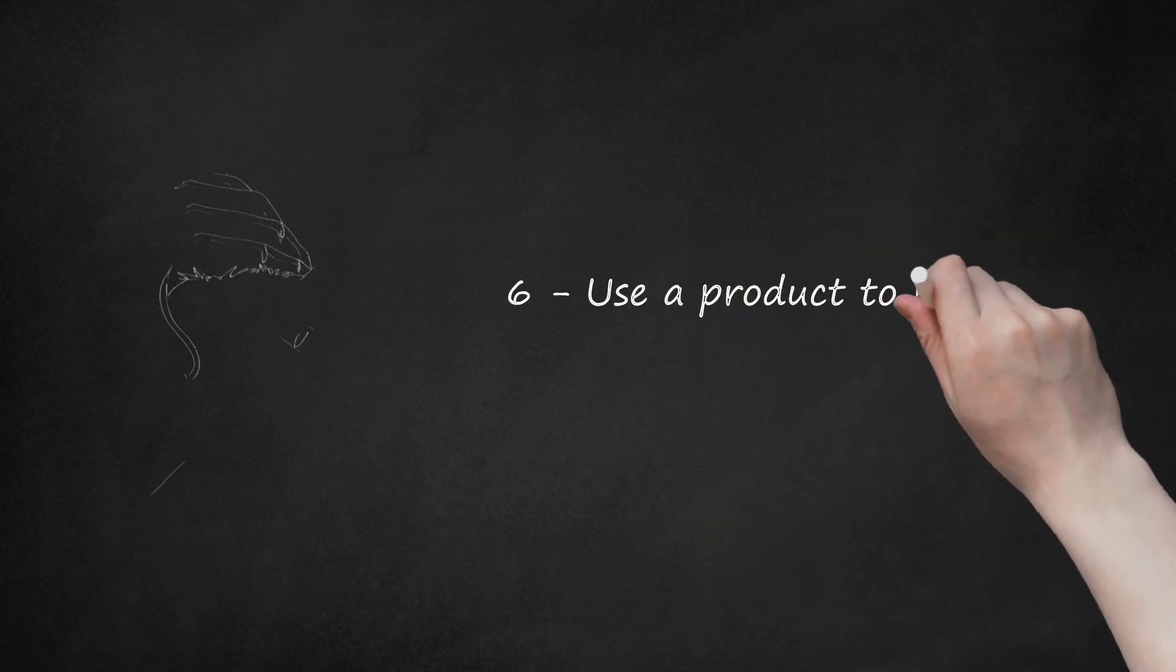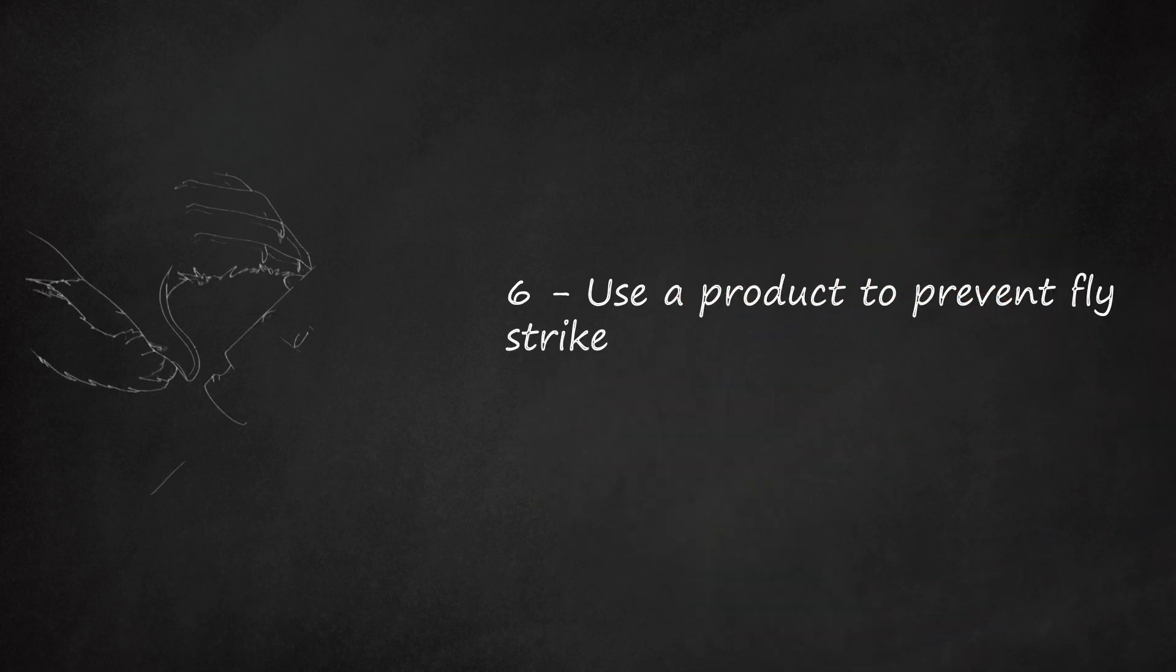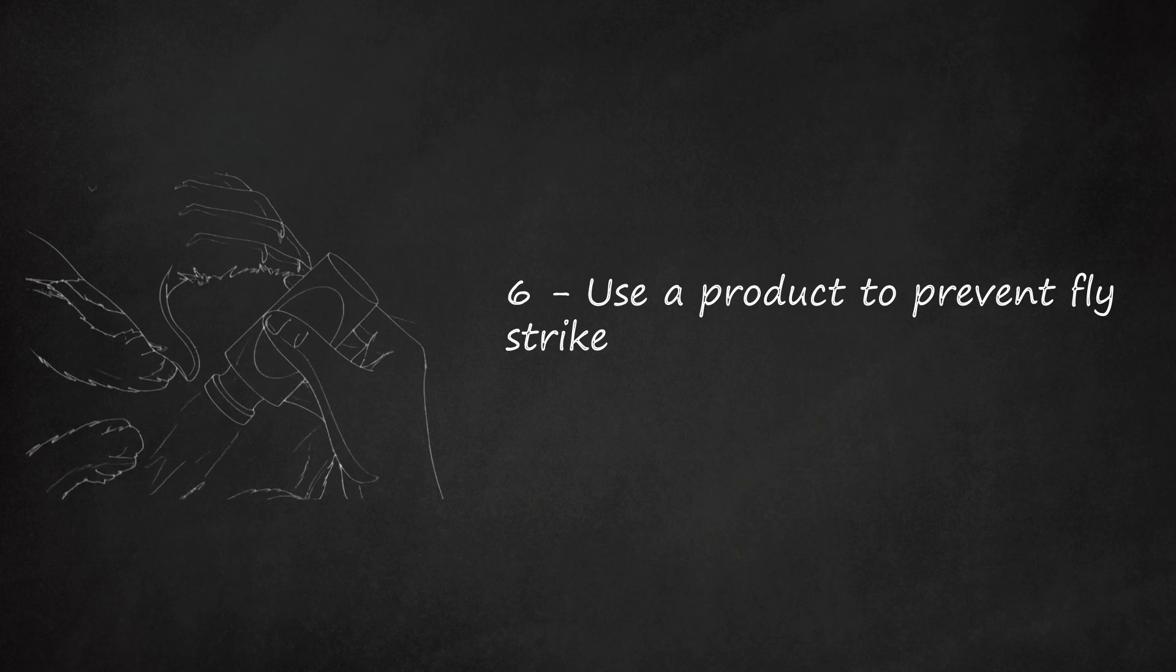6. Use A Product To Prevent Fly Strike. A product called Rear Guard stops eggs hatching into maggots and is effective for 8-10 weeks. It comes in a one-dose applicator and is dabbed onto the fur until it is wet down to the skin. It is then left to dry. Rear Guard does not repel flies or kill maggots, but it stops any eggs that are laid from hatching into maggots.